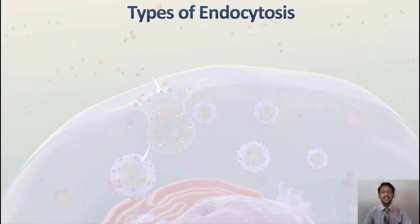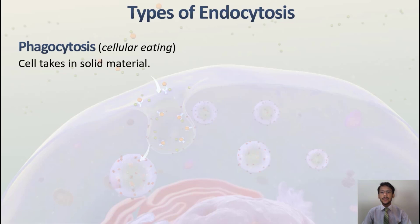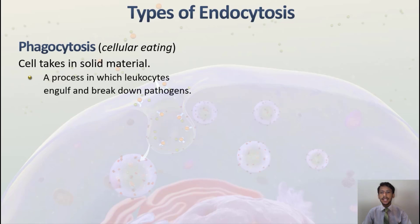There are types of endocytosis. The first type is phagocytosis, also called cellular eating. In phagocytosis, the cell takes in solid material. Whenever any solid material needs to enter the cell, it will enter through phagocytosis. An example is the process in which leukocytes engulf and break down pathogens. Whenever bacteria or pathogens enter your body and can cause disease, leukocytes — a type of white blood cell — engulf and break down those pathogens to prevent infection.